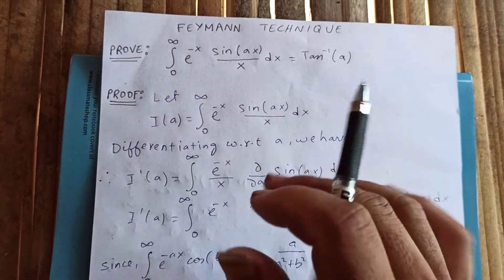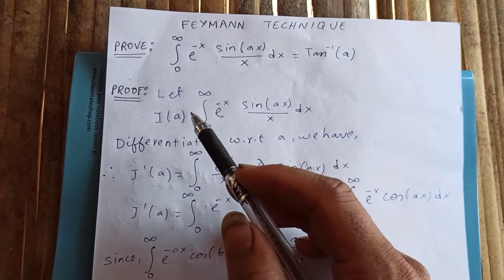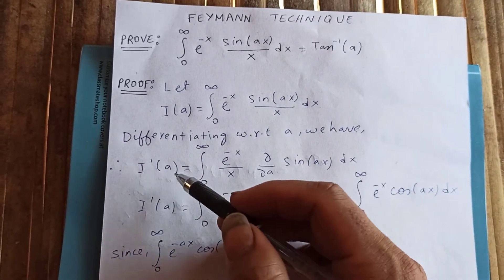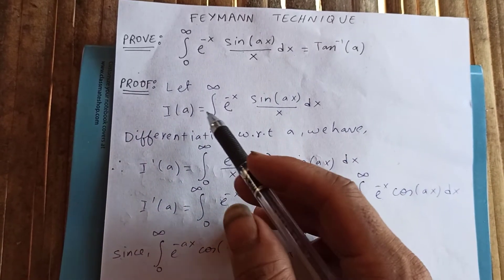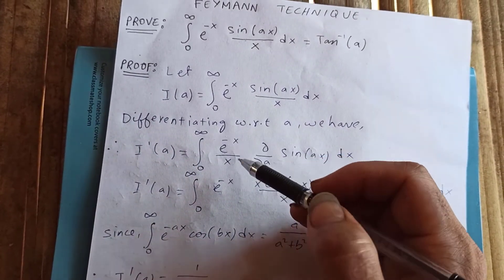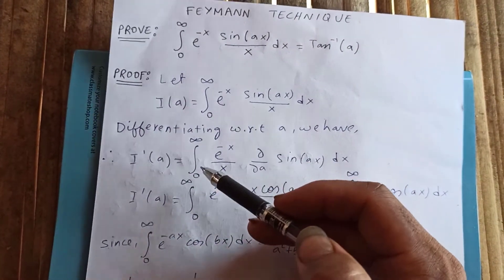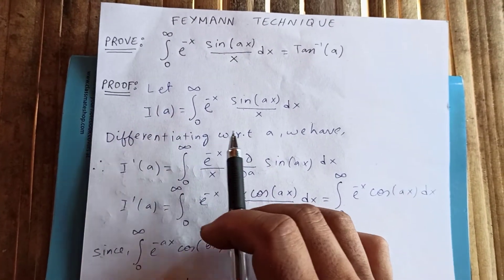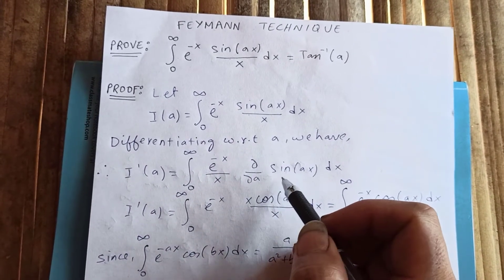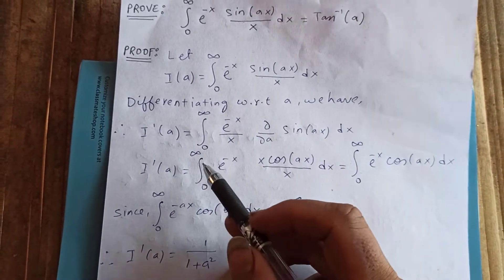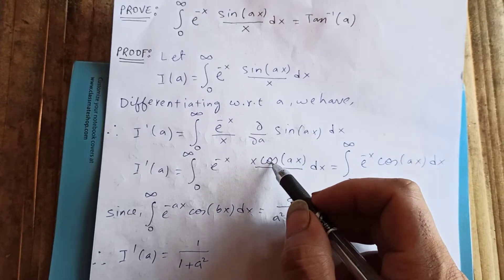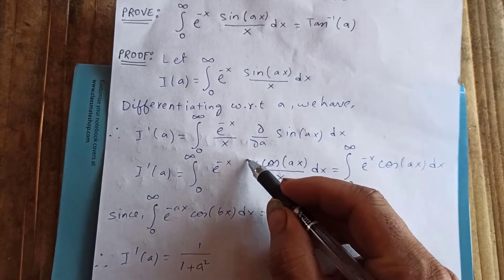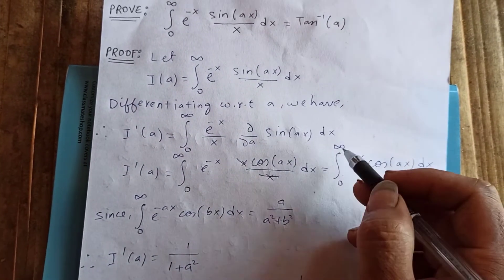Since we've parameterized it, our parameter is a. We differentiate with respect to a: I prime of a equals the integral from zero to infinity of e to the negative x over x times the partial derivative with respect to a of sine(ax) dx. By Leibniz rule, differentiating sine(ax) gives cos(ax) times x, and the x's cancel, leaving the integral from zero to infinity of e to the negative x cos(ax) dx.